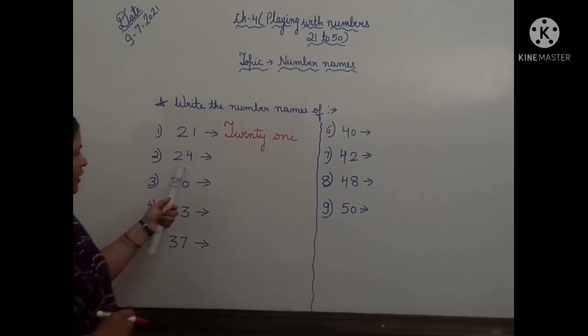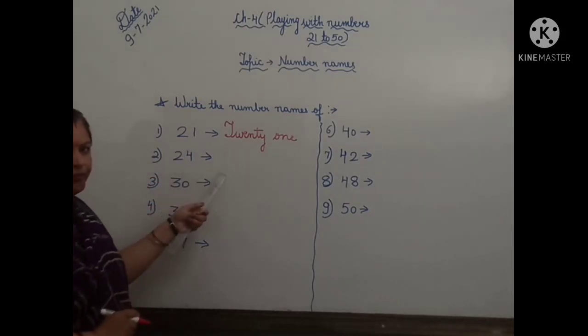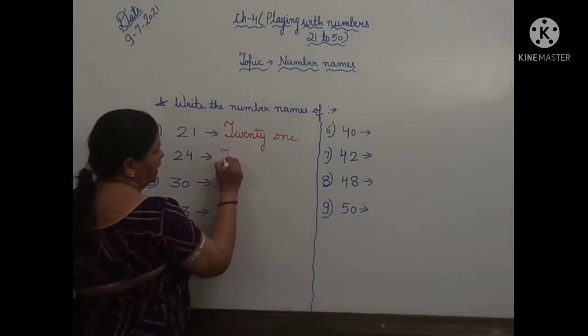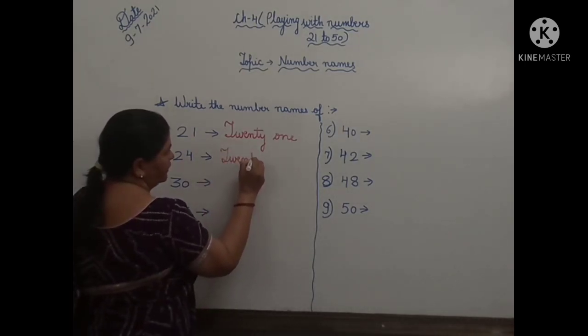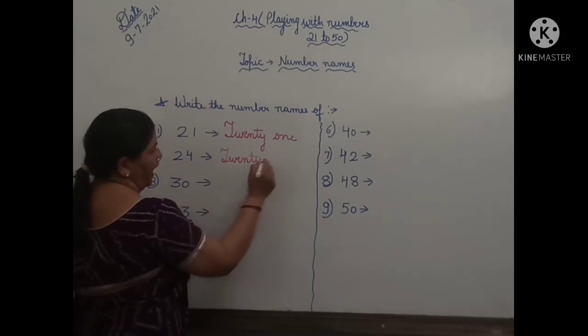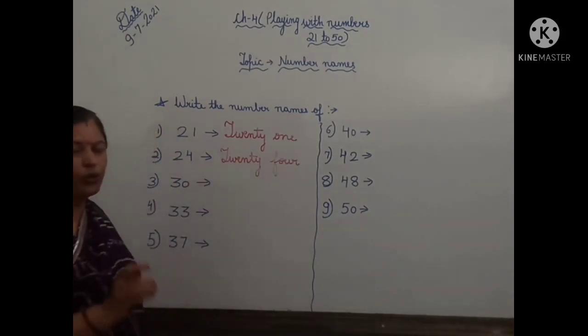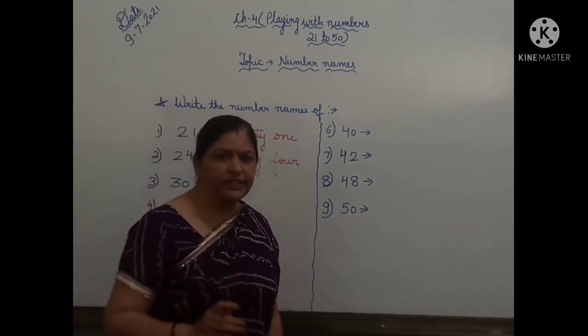Dear children, now the next number, 24. So again you have to write the spelling of 20. T-W-E-N-T-Y, 20. And then you have to write the spelling of 4. F-O-U-R, 4. That means 24.